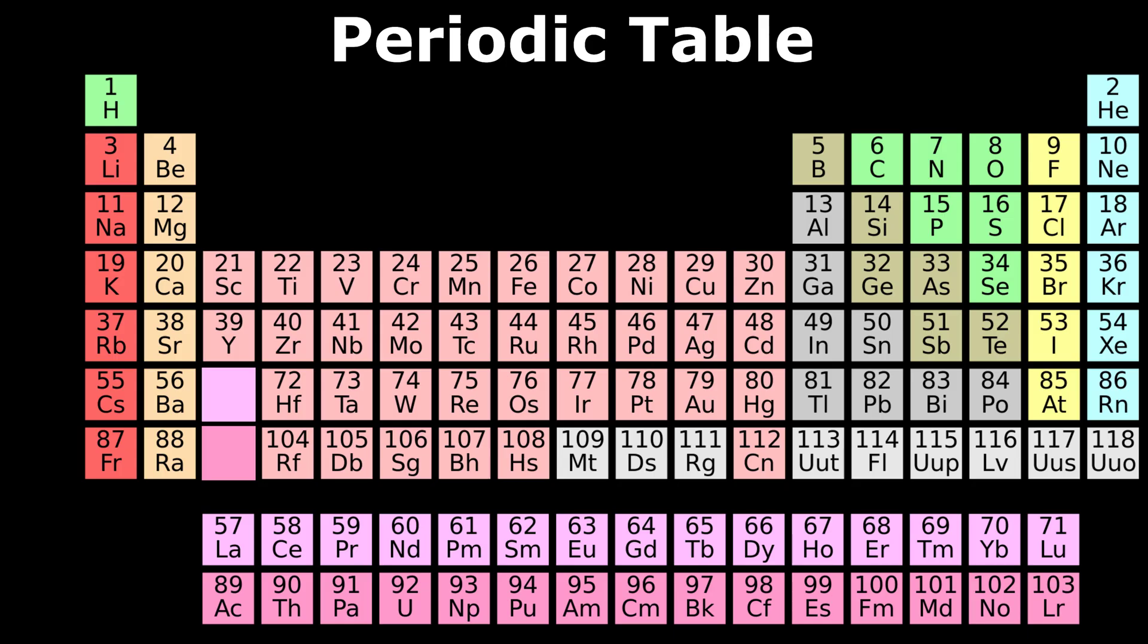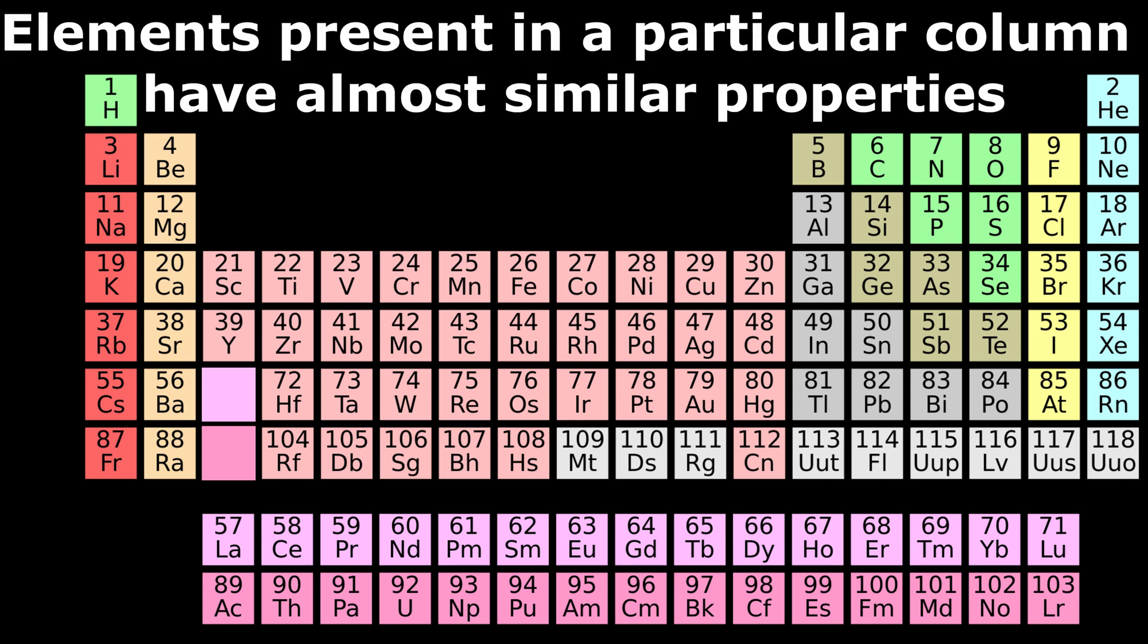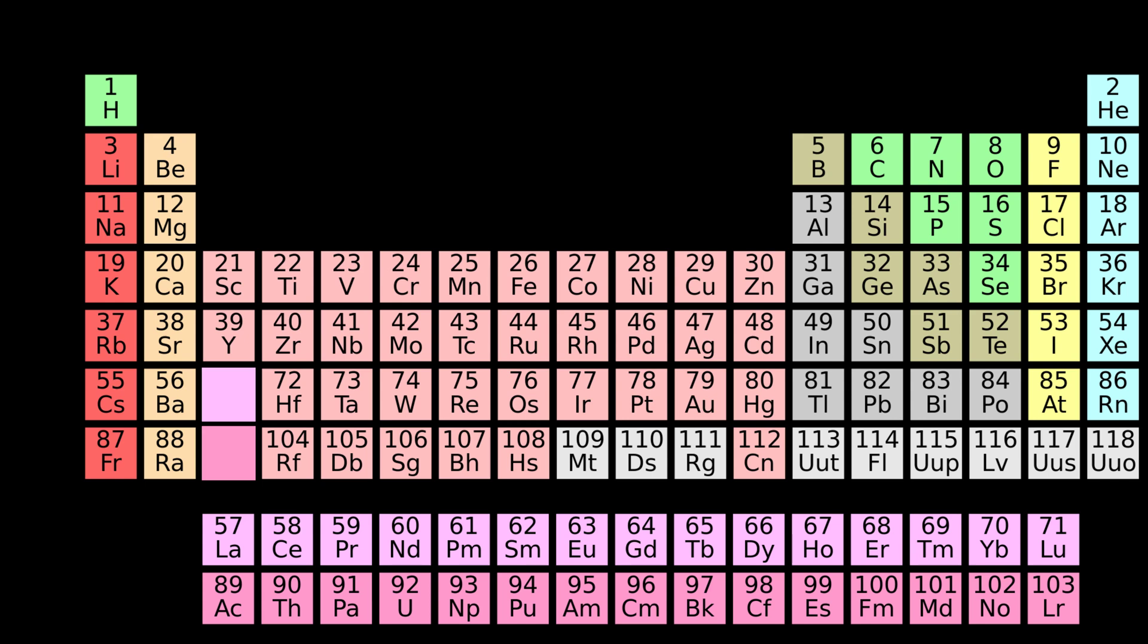Now, let's look at the periodic table. Do you know that in the periodic table elements present in a particular column have almost similar properties? Actually, they have the same number of valence electrons, that is, the same number of electrons in the outermost shell of the atom.